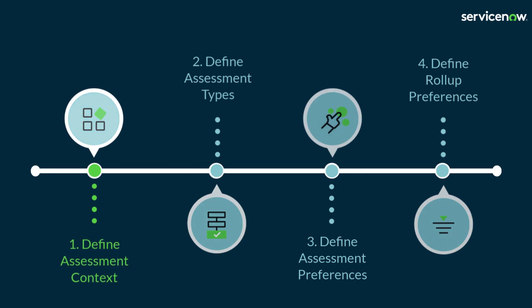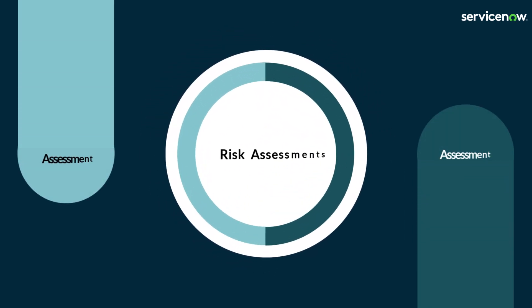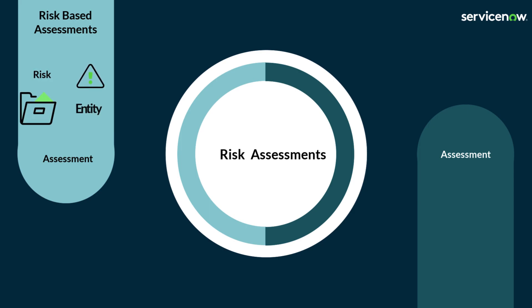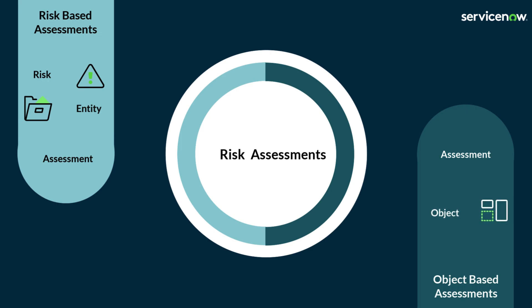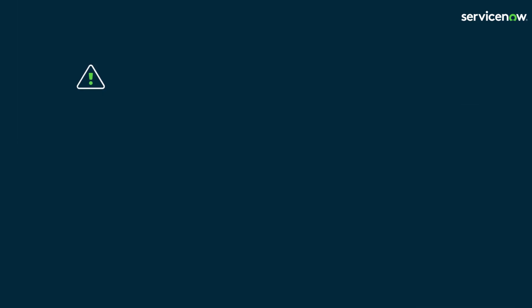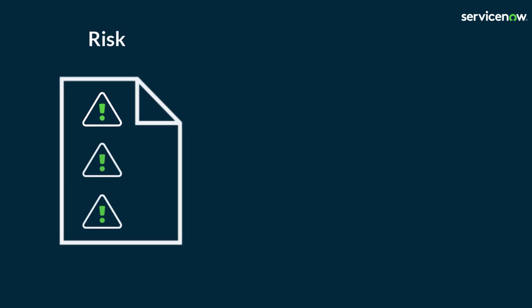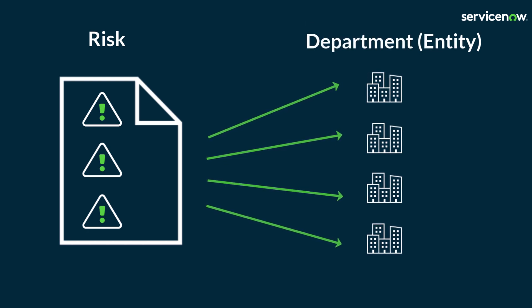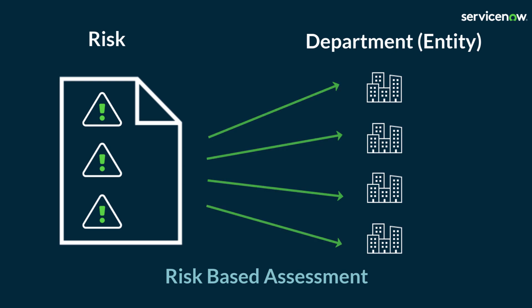Let's take a look at how to define assessment context. Two different kinds of risk assessments can be configured depending on their context. The first, risk-based assessments, is when an individual risk must be identified and assessed in the context of an entity. The second is object-based assessment, which allows the risk assessment of any object within ServiceNow without the need to identify individual risks — only the table of the object is required. Within Demo Corporation, operational risks will be assessed in the context of departments, so stakeholders can self-assess risks that affect them, as well as the impact of the controls that have been put in place. Therefore, risk-based assessments would be the appropriate type, as risks are being assessed in the context of an entity — in this case, departments.